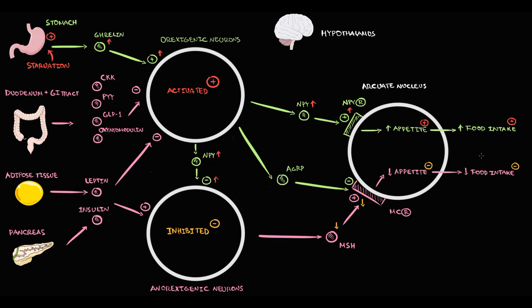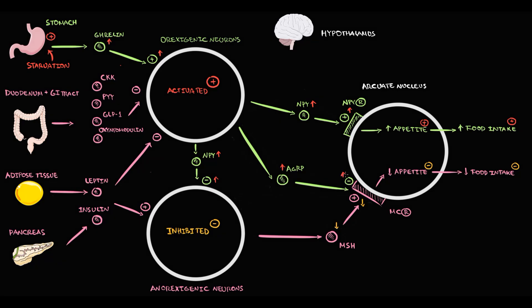Obviously, a minus times a minus gives a plus — so suppression of decreasing food intake is equal to increasing food intake. Additionally, with activation, orexigenic neurons increase the production of agouti-related peptide. This leads to additional suppression of appetite inhibition, which causes additional increasing food intake — because, as we know, minus times minus gives plus.